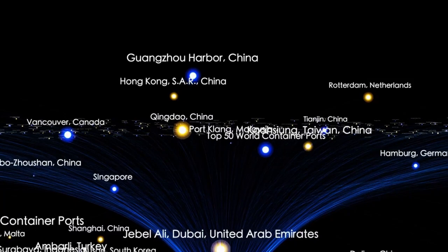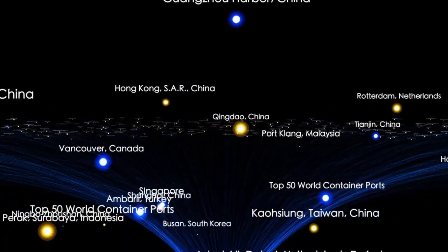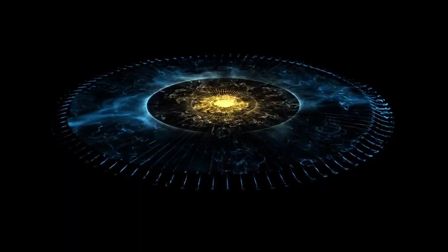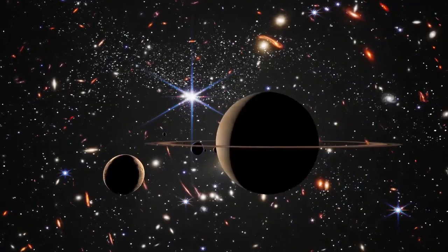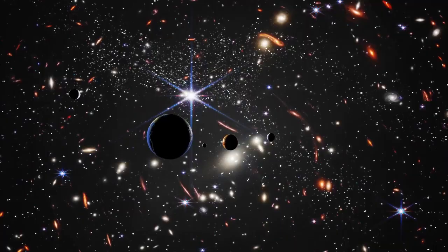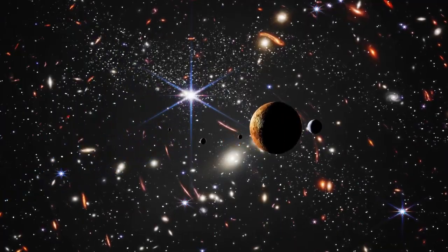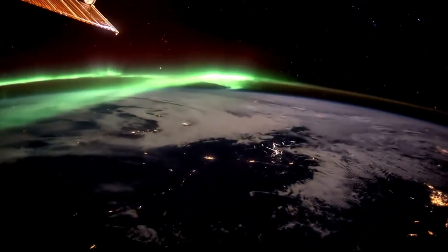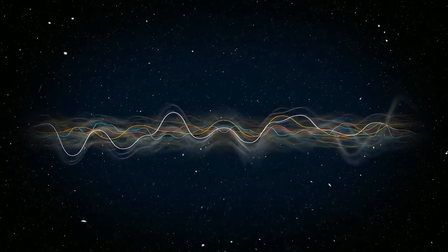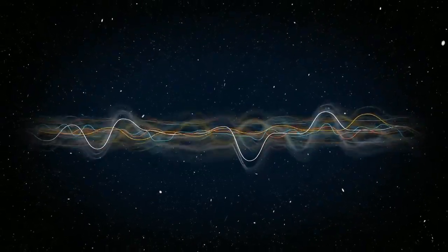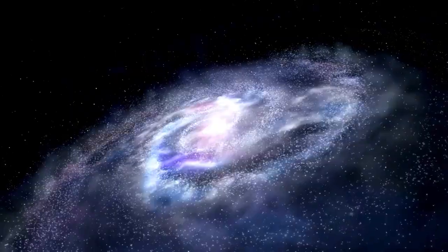When we talk about the universe, we often mean the observable universe, the portion we can see from Earth. This is limited by the speed of light. Because light takes time to travel, we can only observe objects whose light has had enough time to reach us since the beginning of the universe, which was roughly 13.75 billion years ago. Due to the continuous expansion of the universe, light from distant objects has stretched and moved farther away. The most distant light we can currently detect comes from objects about 45 to 47 billion light-years away. That gives us an observable universe with a diameter of approximately 93 billion light-years.